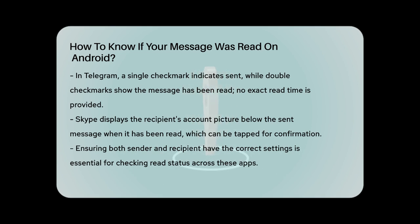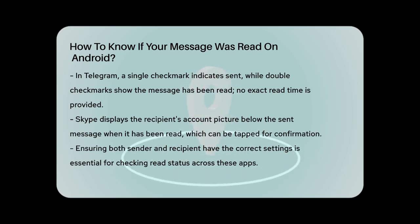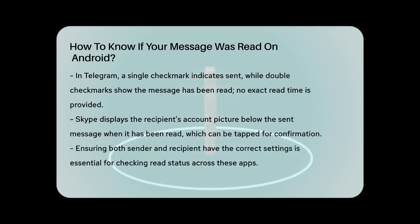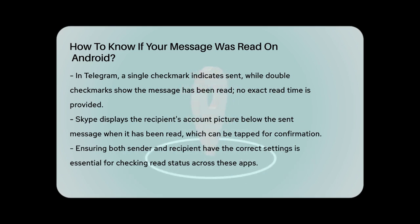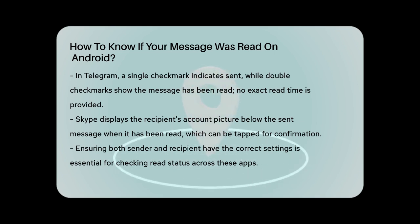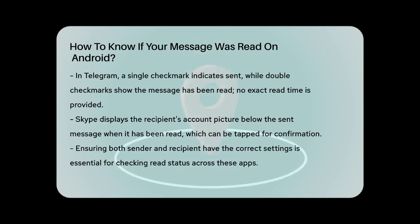Lastly, if you're using Skype, here's what you need to know. When the recipient reads your message, their small account picture will appear below the sent message. You can tap on this picture to confirm that they have read the message. By following these steps for each messaging app, you can easily find out if your message was read on your Android device. Remember, the key is to ensure that both you and the recipient have the necessary settings enabled.